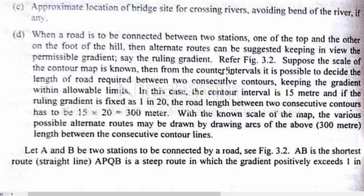Keeping the gradient within allowable limits: if the contour interval is 15 meters and the ruling gradient is fixed as 1 in 20, then the road length between two consecutive contours has to be 15 multiplied by 20, equal to 300 meters. Here, 15 is the contour interval and 20 is the gradient (1 in 20), so the road length is 300 meters. With the known scale of the map, various possible alternate routes may be drawn with 300 meter lengths between consecutive contour lines.